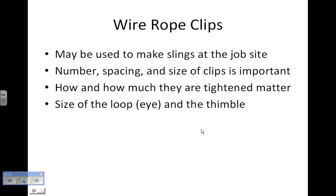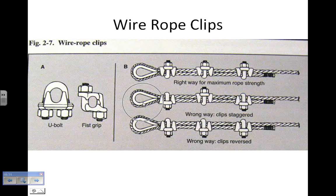How much the clips are tightened also matters. If you over-tighten them, you could damage the rope; if they're not tight enough, they could slip. The size of the loop — the eye and the thimble — also matters. The thimble fits inside and acts as a form to give you that loop, and it also protects the wire rope from wearing against something, much like a thimble in sewing protects your finger.